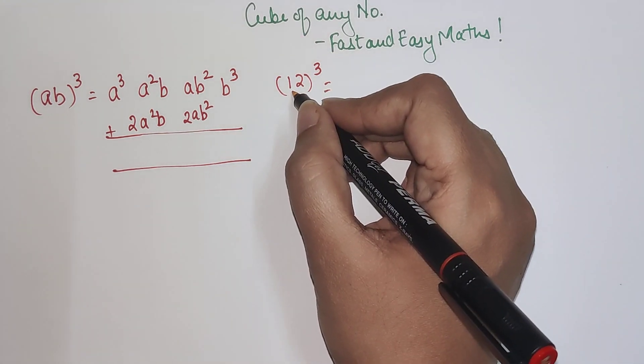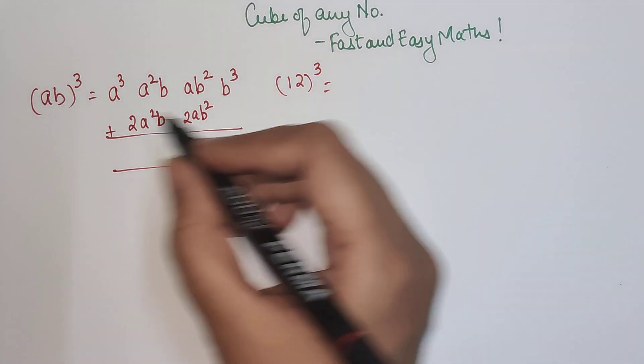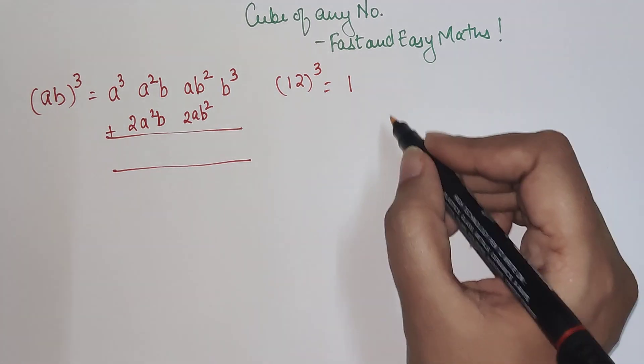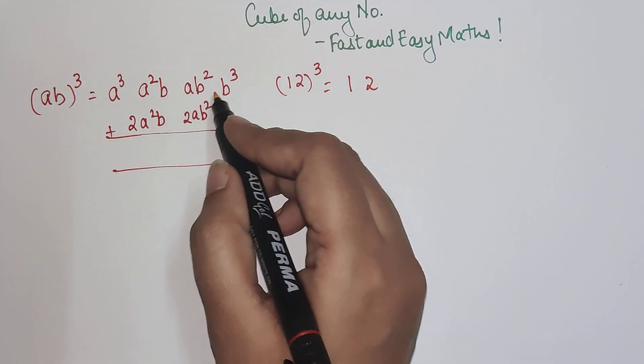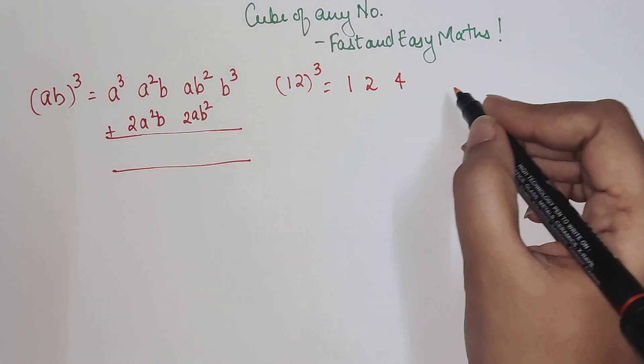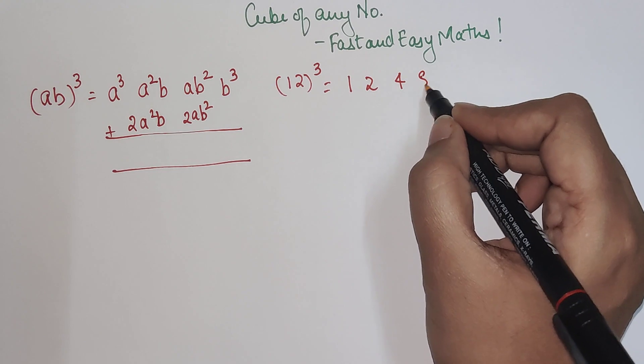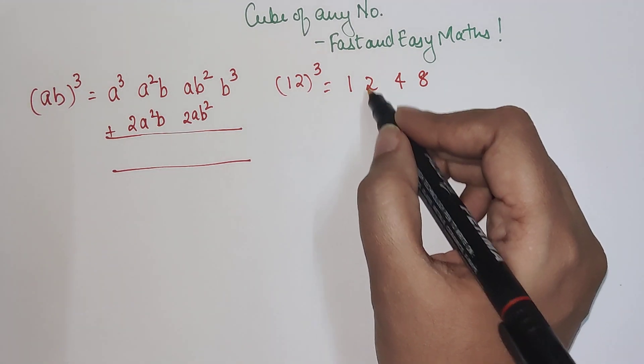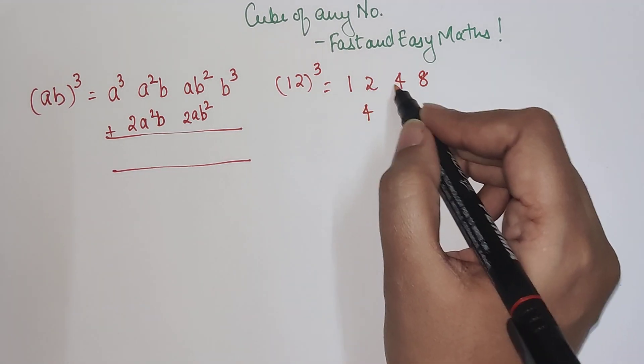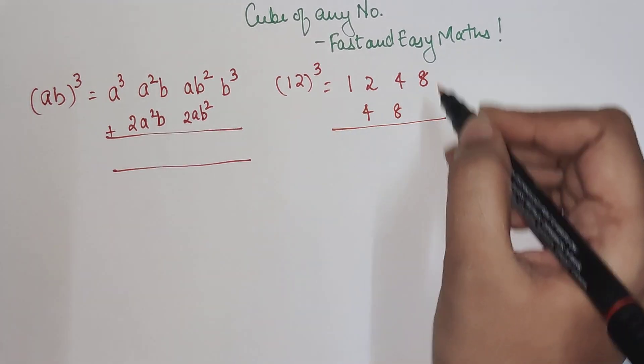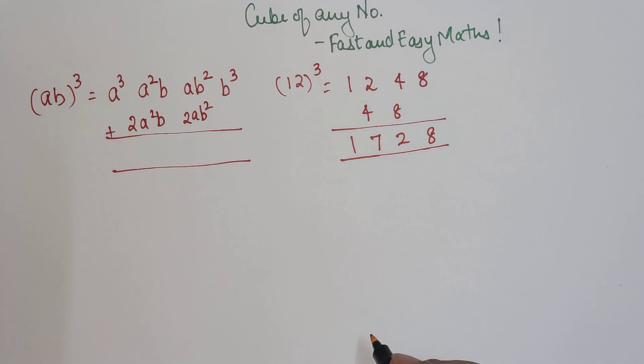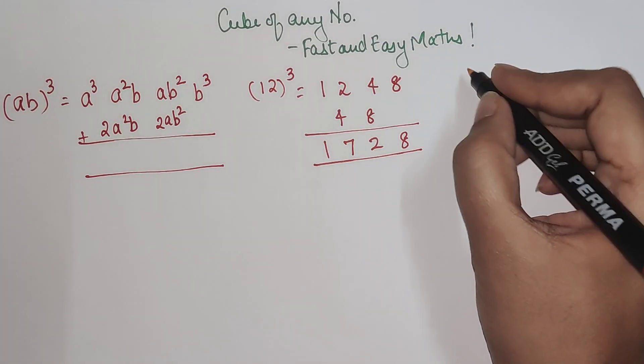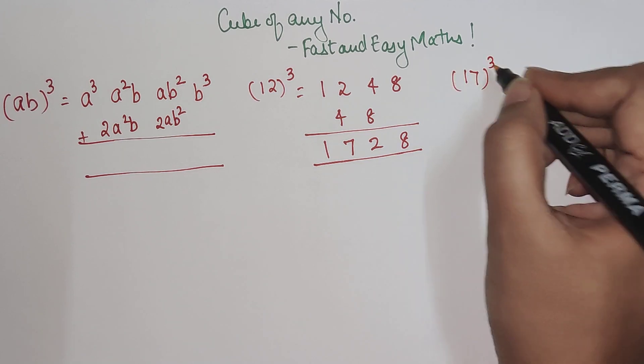So now 12 - 1 is your a and 2 is your b. First we do 1³ which is 1, then 1² × 2 that gets you 2, then 1 × 2² that is 4, then 2³ which is 8, and next we'll double this so this becomes 4, this becomes 8. Just add them so you get 8, 12, 1 carry, 7, 1, 7, 2, 8 - that is your answer for 12³.